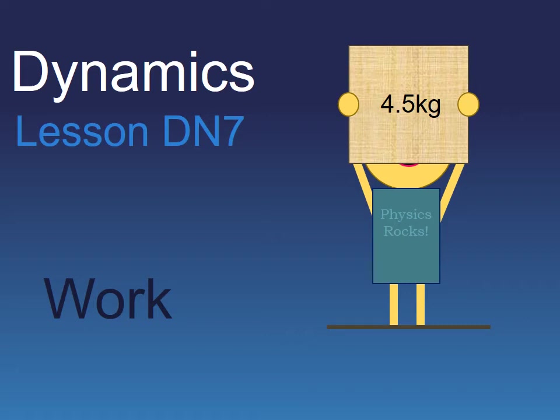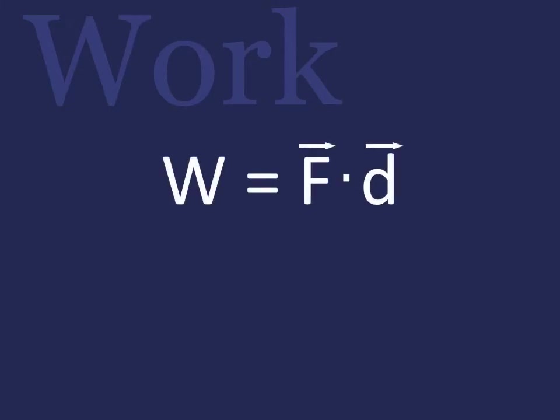Welcome to the lesson for the DN7 assignment. Work is defined as a force multiplied by the displacement of the object relative to the direction of that force. This would make the units newtons times meters.